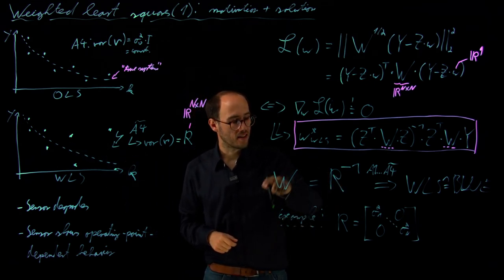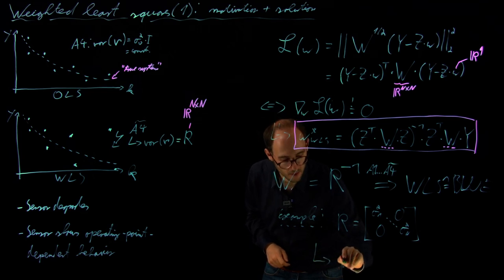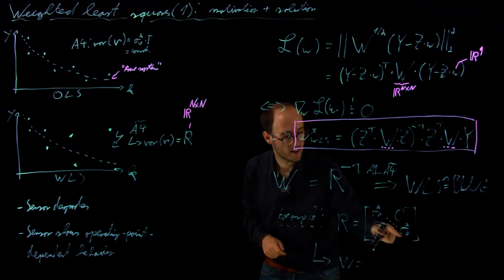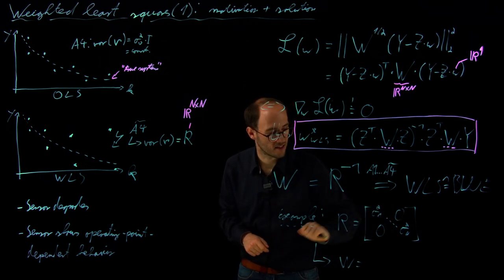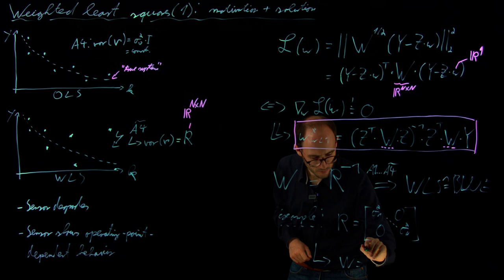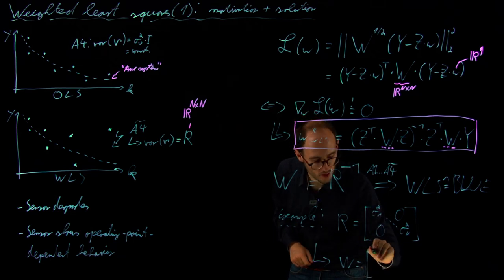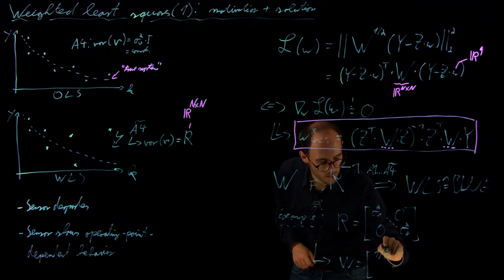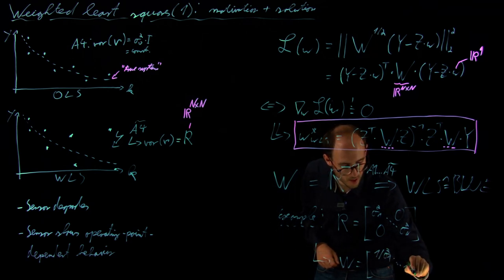So basically the sketch which we have seen here. And if I apply this weighting, then what we get, so if we take the inverse from that, that is practically as this is a diagonal matrix, just one over sigma 1 square until one over sigma N square.